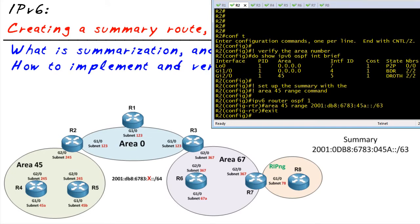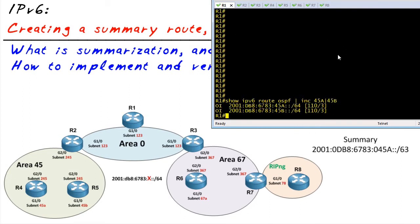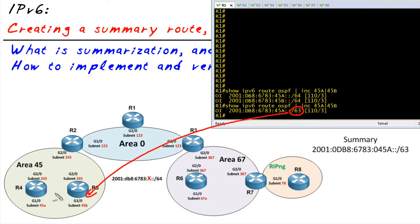Now OSPF has already converged—it's very quick to do it. If we go back to R1 and hit the up arrow, it's going to now show us, 'Hey, guess what, I have one inter-area route. It's no longer 64 bits, it's 63.' But that /63 correctly represents both of those subnets.